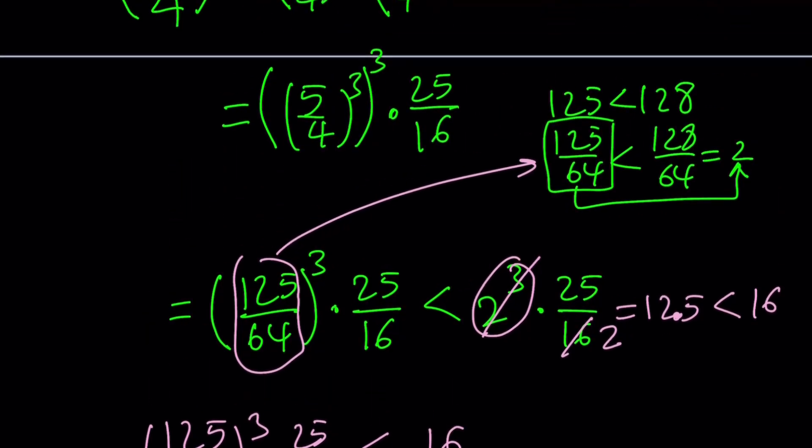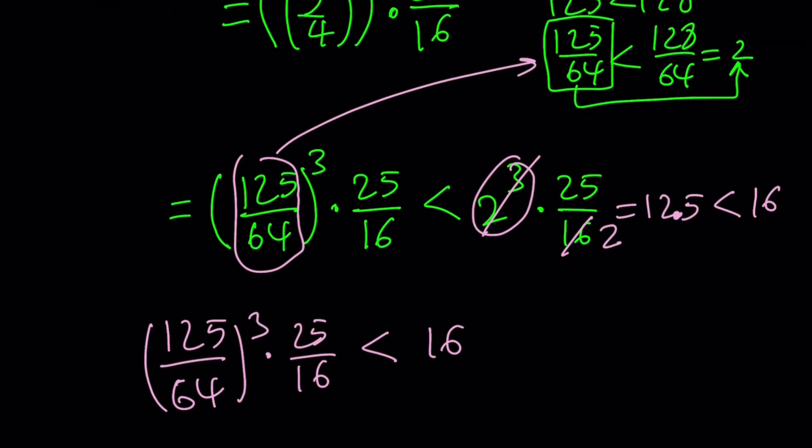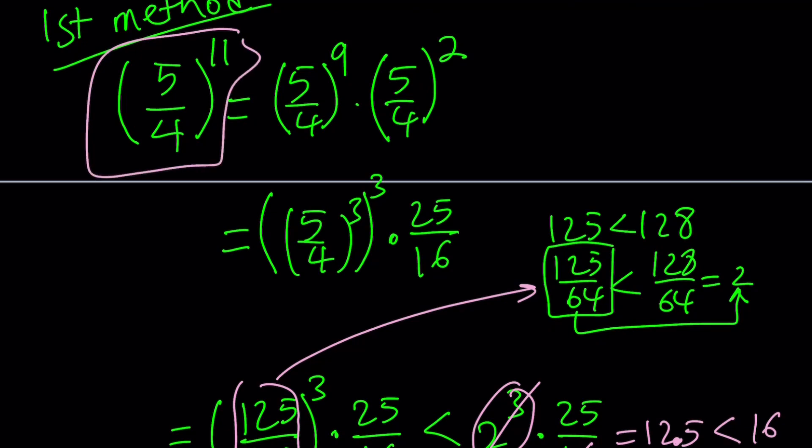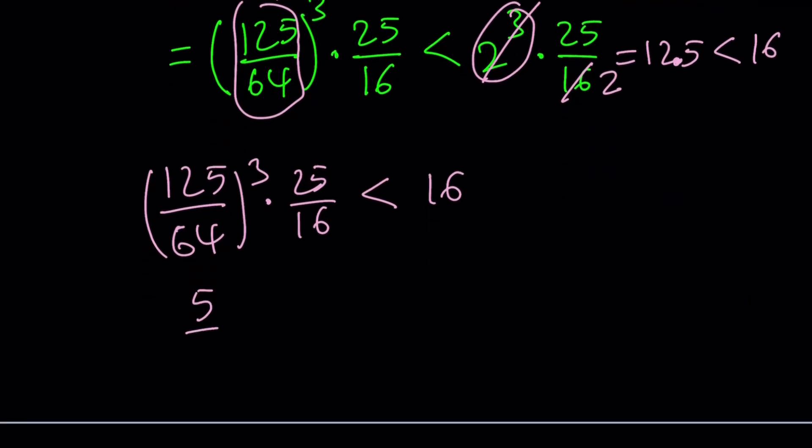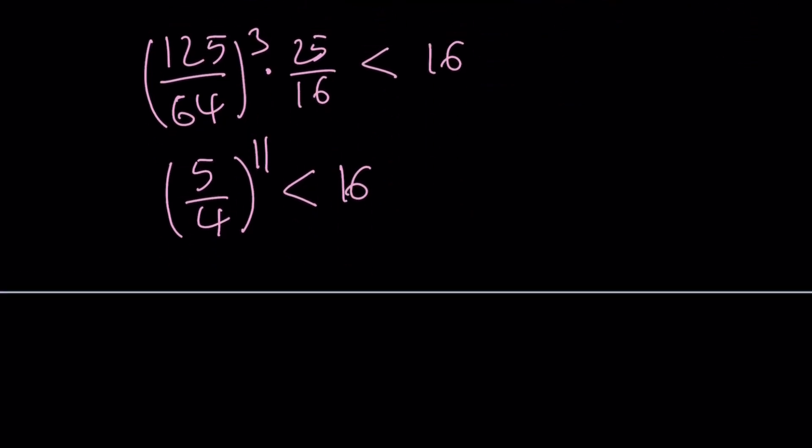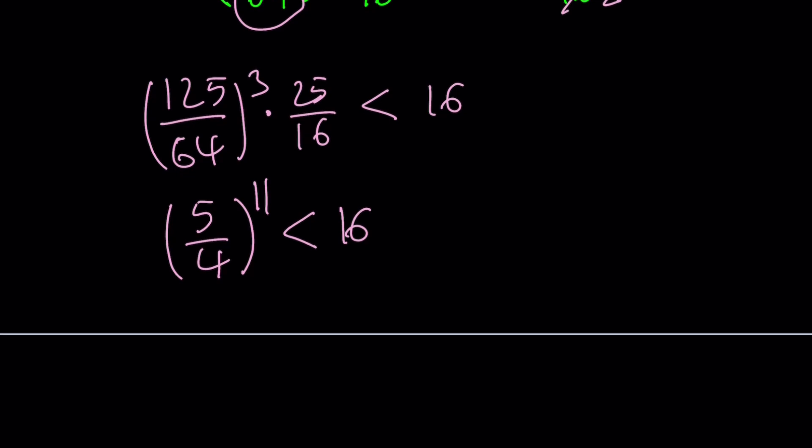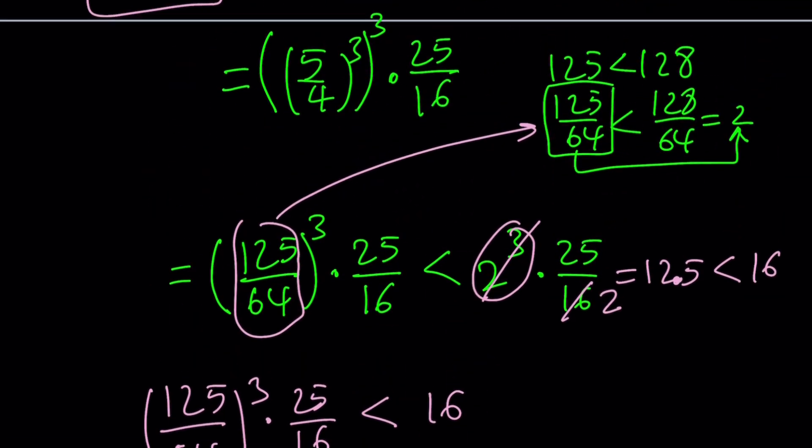125 over 64 cubed times 25 over 16 is less than 16. This is what I started with, so 5 over 4 to the power 11 happens to be less than 16, which is super nice because 16 is 4 squared. The critical part is getting a power of 4 at the end.